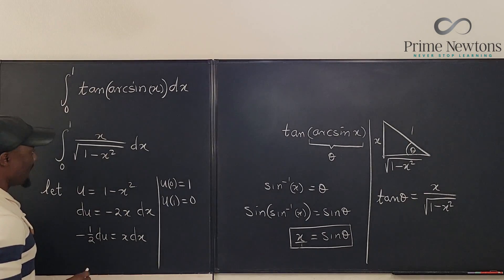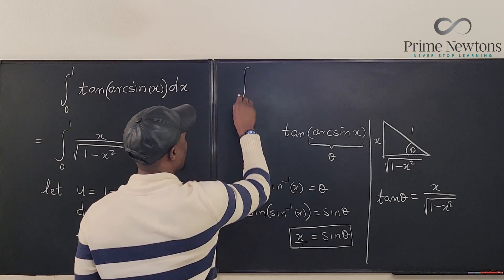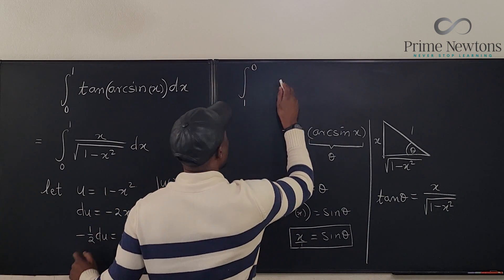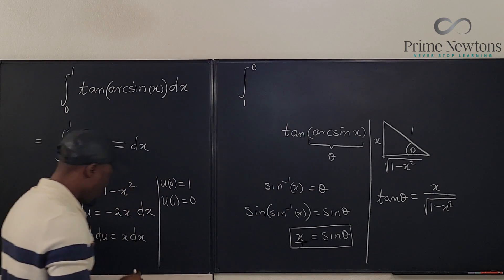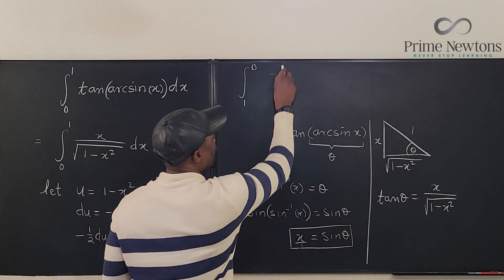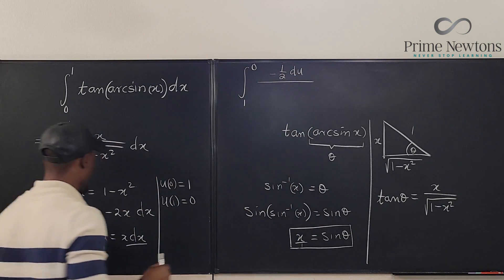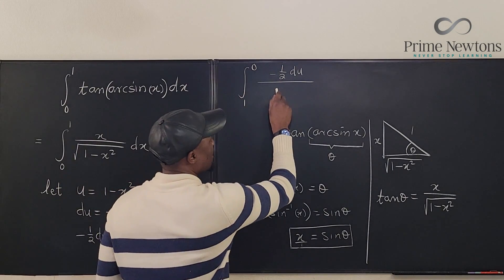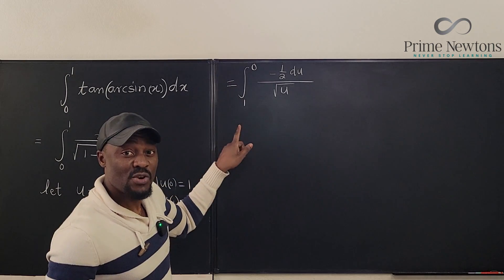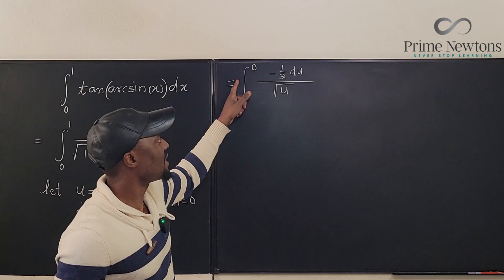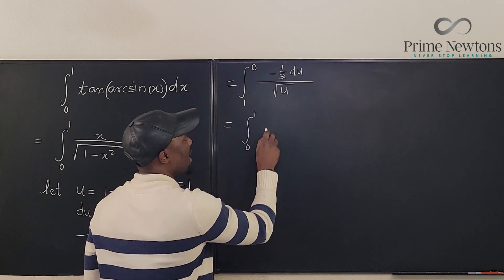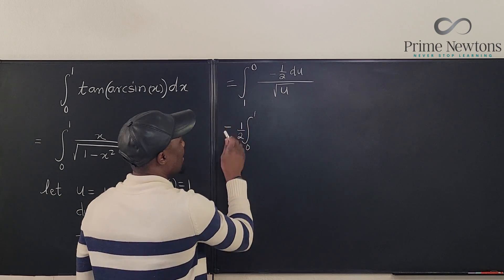So we're going from 1 to 0 now. We change the whole integration: where it was 0 it's now 1, and where it was 1 it's now 0. We replace x dx with negative one-half du, and what's under the radical becomes the square root of u. We usually integrate from lower to upper limit, so we switch the limits and change the sign. That minus changes the existing minus to a plus, so we go from 0 to 1, and we can pull the one-half out front.